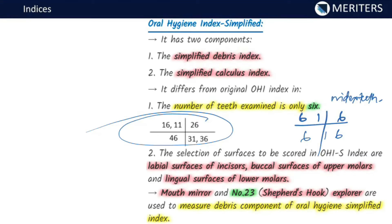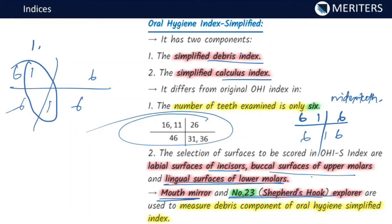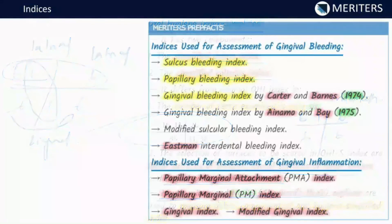The OHI-Simplified measures only certain index teeth — 16, 11, 26, 36, 31, and 46. It is a partial index with two components: a debris index and a calculus index, calculated separately and then combined. The surfaces selected for scoring are the labial surfaces of incisors, the buccal surface of the upper molars, and the lingual surface of the lower molars. Instruments used are a mouth mirror and a number 23 Shepherd's hook explorer.